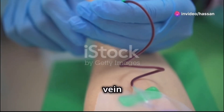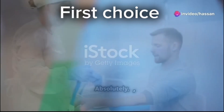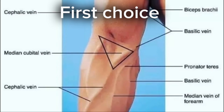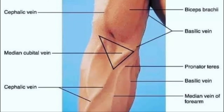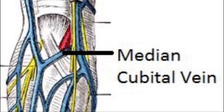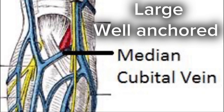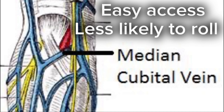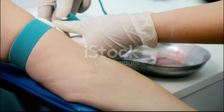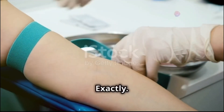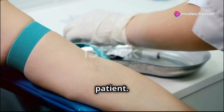Does anyone know which vein is typically our first choice? The median cubital vein is usually the first choice. That's correct. The median cubital vein is located in the antecubital fossa. It's large and well-anchored, which makes it easier to access and less likely to roll. It's also generally less painful for the patient.